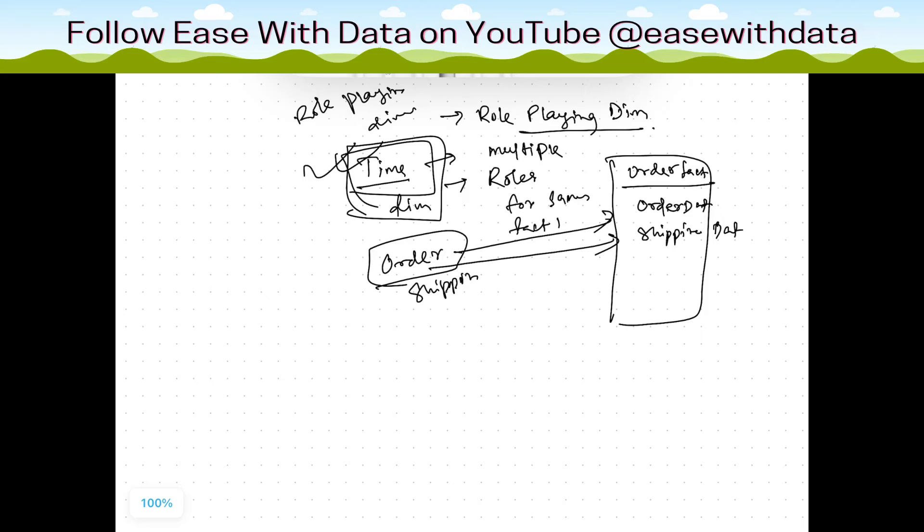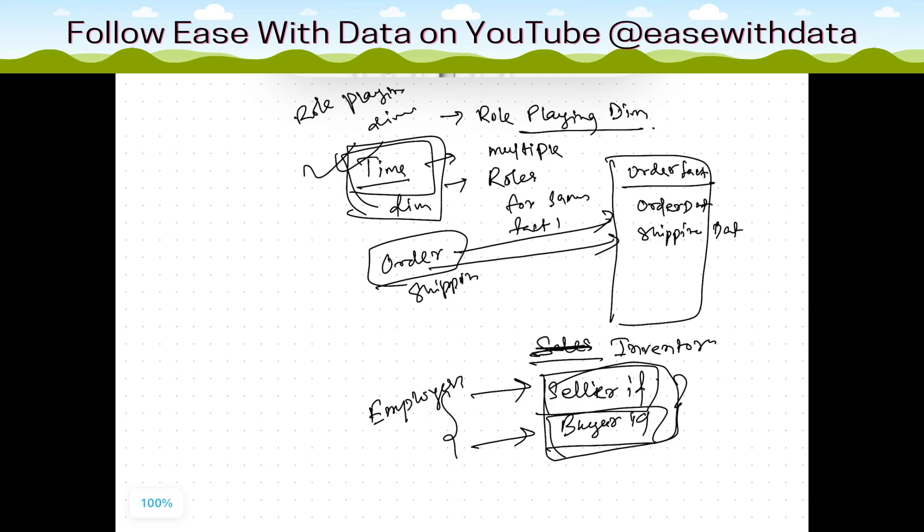Now we can have one more example. Consider your sales fact. You can have a seller ID and you can have a buyer ID. The person who is buying this product and the person who is selling this product. Now this seller and buyer both are actually employees. So consider this is a B2B. The seller and the buyer both are employees. So in this case the employee dimension is playing a role for both seller and buyer. So this is a role-playing dimension here. We can connect the employee for both of them, for seller and buyer.